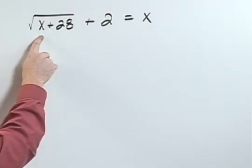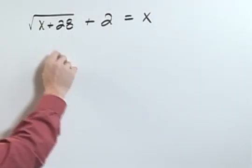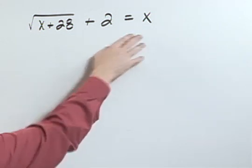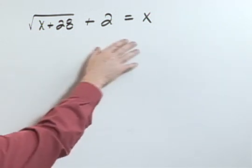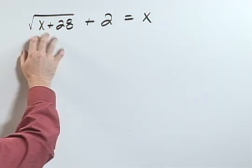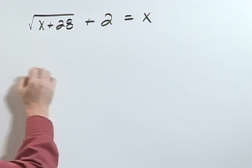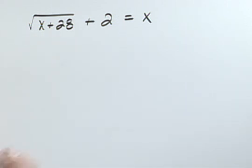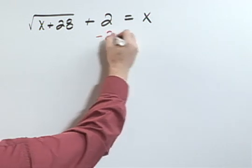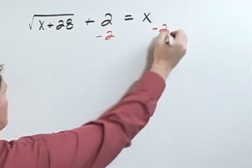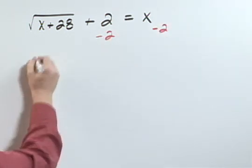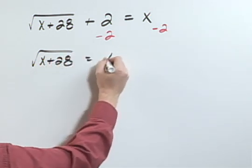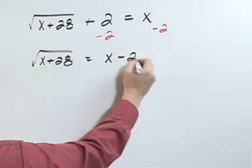The square root of x plus 28 plus 2 equals x. Since I'm solving for x and I have a square root, I'm going to try to get rid of that square root first. But in order to do that, I need to get it by itself. So I'm going to subtract 2 from both sides so that I have the square root of x plus 28 equal x minus 2.